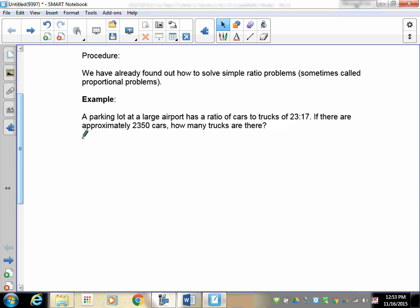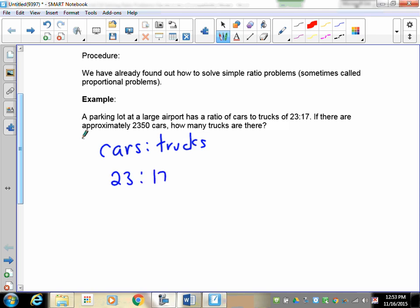Here's our problem. A parking lot at a large airport has a ratio of cars to trucks of 23 to 17. There are approximately 2,350 cars. How many trucks are there? So if we know that the cars to trucks are 23 to 17, we have to make sure that stays the same. If there are approximately 2,350 cars, we want to know what is the amount of trucks. So I'd like you to solve this question. You have all the tools that you need.